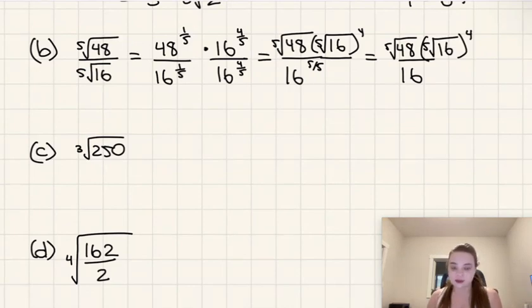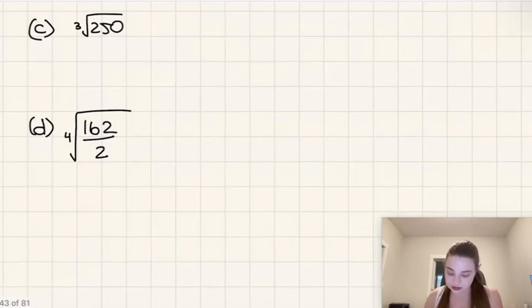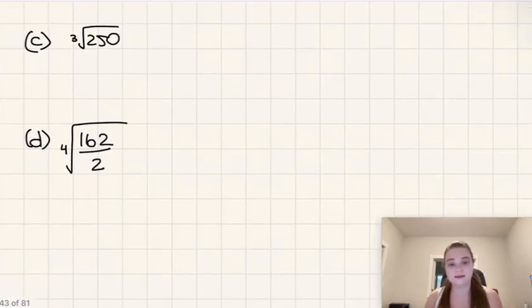All right, here's another one. It says cube root of 250. So for this one, there is no fraction nor is there any denominator that has a radical in it. So the only possible thing that could be making this not its simplest form is this number 250 could have a factor that is a perfect cube.